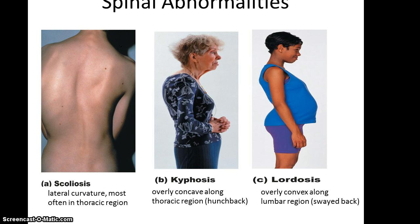Sometimes you can get spinal abnormalities where the curvature is incorrect. For instance, you can have scoliosis, where you have a lateral curve, most likely in the thoracic area. You can have kyphosis, which is where you have an overly concave portion along the thoracic region, forming sort of a hunchback. And then you can have lordosis, which is an overly convex curve in the lumbar region. The woman in the picture for lordosis is not pregnant — those are her abdominal organs pushing forward.